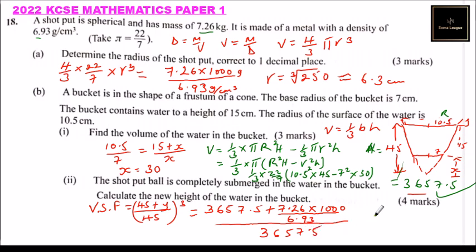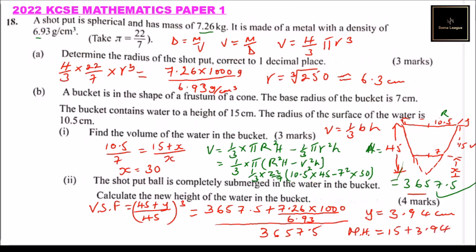Using a calculator, work out the volume scale factor and find y equals 3.94 centimeters. This is the change in height. Adding to the initial water height of 15 centimeters, the new height equals 15 plus 3.94, which gives 18.94 centimeters. That is the new height of the water in the bucket. By doing all of this you should be able to score 10 marks.